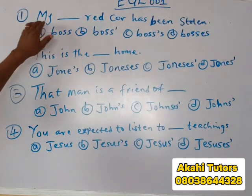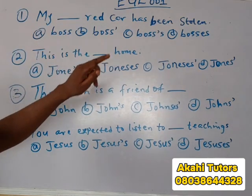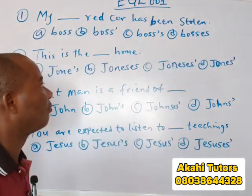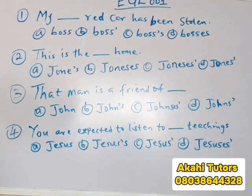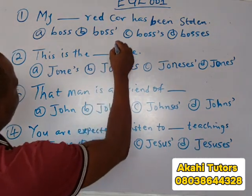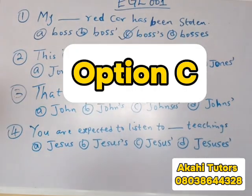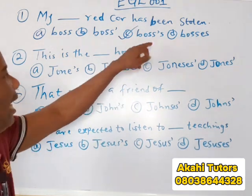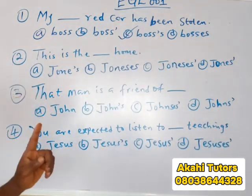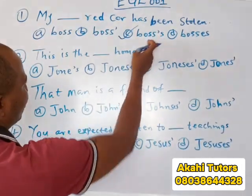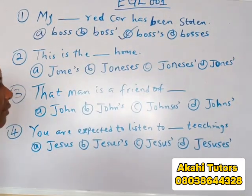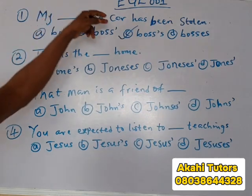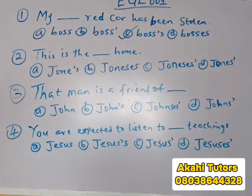Question one: my blank red car has been stolen. The options are: boss, bosses, boss's, bosses'. The answer to number one is option C. This is because when you have a noun that ends with S and it contains only one syllable, you put the apostrophe marker followed by S. So: my boss's car, or my boss's red car has been stolen. The answer is option C.